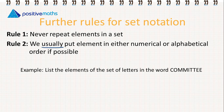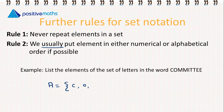Let's go through an example. We want to list the elements of the set of letters in the word 'committee.' We're going to think about our two rules here — we want to list the letters, but we only ever put in each element once. I'm going to denote this set with the capital letter A, and now we're going to list our elements: C, O, M, I, T, and E.